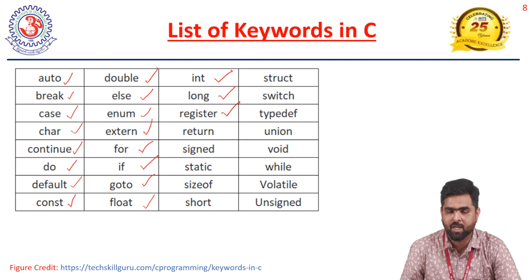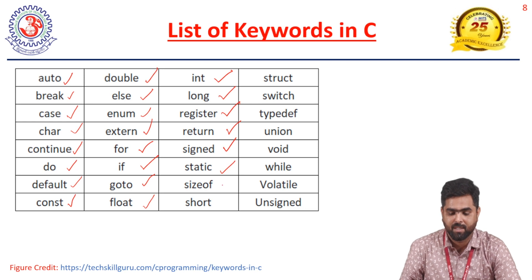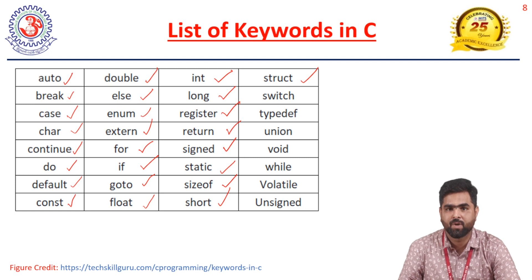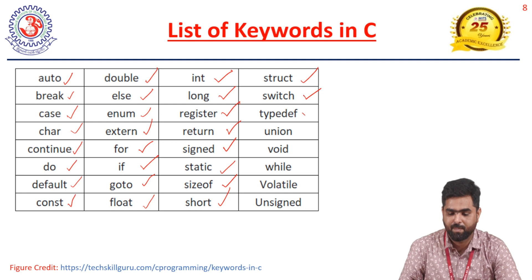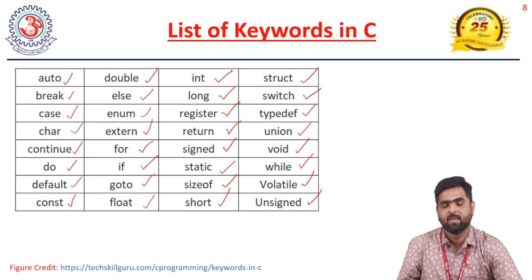'Return' is used when you want to write a return statement. Other keywords include 'signed', 'static', 'sizeof', 'short', 'struct' — used while defining a structure — 'switch', 'typedef', 'union', 'void', 'while', 'volatile', and 'unsigned'. These are the total 32 keywords available in C language.